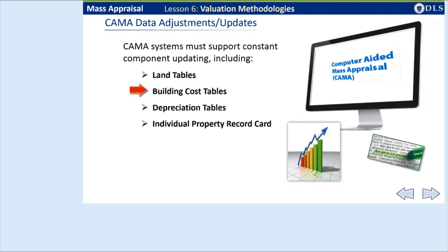Building cost tables need to be updated annually to reflect current reproduction costs. These tables can be verified by cost manuals that contain local cost indexes. Local builders and contractors can also be referenced for pricing support. Depreciation tables also need to be updated annually and should show the typical loss in value at various ages for different types of properties. CAMAS must also be capable of updating and displaying property record card changes as soon as any data or informational changes are made.